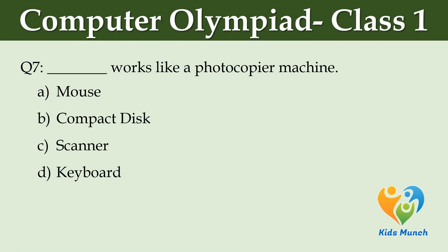Option D: dash works like a photocopier machine. Option A: Mouse. Option B: Compact Disc. Option C: Scanner. Option D: Keyboard.